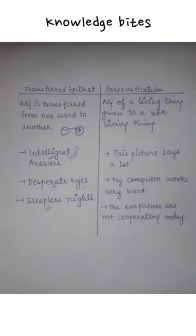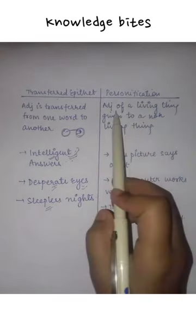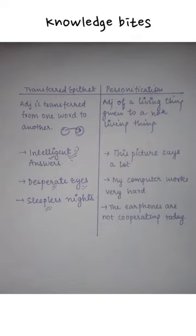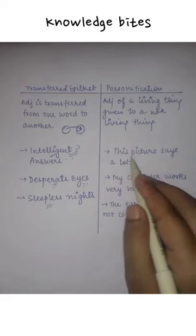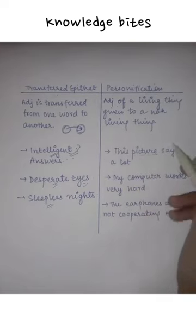Now, personification. Personification is what happens when a living thing or non-living thing is given an adjective. Like, this picture says a lot. Picture cannot say, but still, we have given this property to a picture.